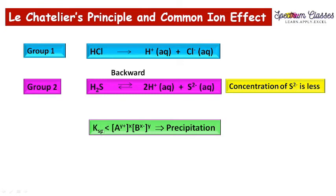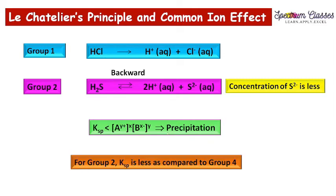Due to this backward direction, we have less dissociation of H2S gas, and therefore the concentration of S²⁻ in the solution is less. Since the Ksp value for Group 2 metal sulfides is less than for Group 4, only Group 2 metal sulfides get precipitated. Group 4 metal sulfides do not precipitate in Group 2 because the ionic concentration of S²⁻ is less than their higher Ksp values.